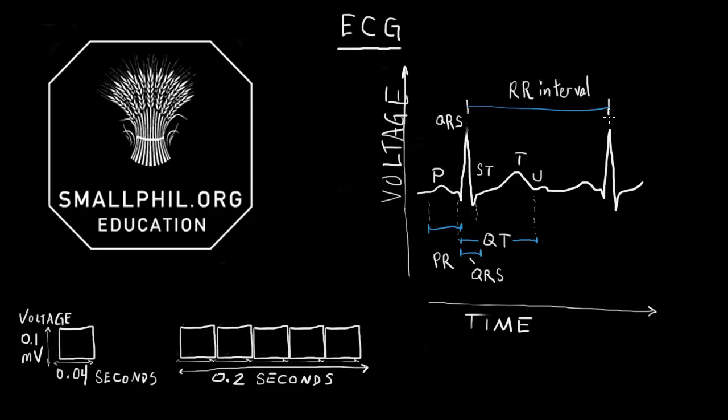And the RR interval is the time of the cardiac cycle, so the ventricular cardiac cycle. And this RR interval is the heart rate. The duration between P waves is considered the atrial cycle.